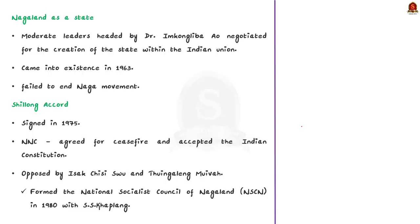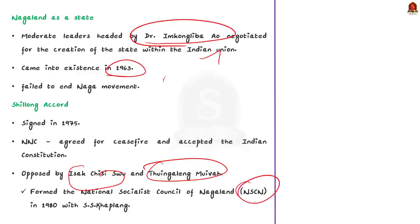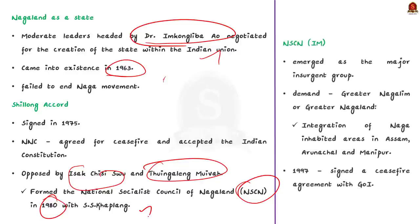After long negotiations, some moderate leaders headed by Imkong Liba negotiated for the creation of the state of Nagaland within the Indian Union. Hence, the state of Nagaland came into existence in 1963. But even this failed to end the movement because majority of the Naga-inhibited areas were left outside the new state. Then, in 1975, the Shillong Accord was signed in which the Naga National Council agreed to give up arms and accept the Indian constitution. But two Naga National Council members revolted against this. They were Isak Chisi and Moiva. They termed the Accord as a sellout or the brittale of the Naga's authority demand. So, they formed the National Socialist Council of Nagaland in 1980. And another leader by the name Kaplan joined the National Socialist Council of Nagaland. These names are important. So, try to remember them.